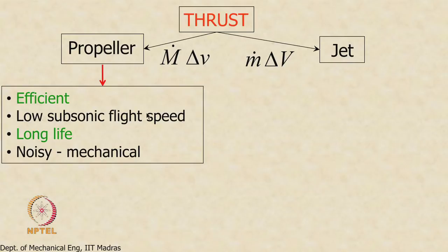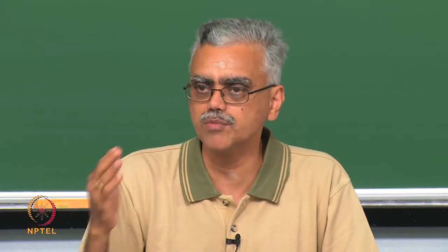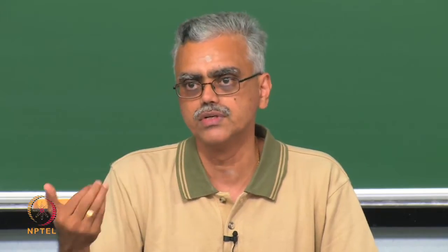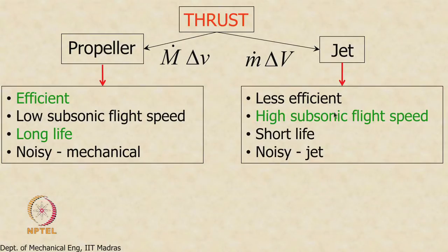The other alternative is jet propulsion, which accelerates a smaller mass of air through a large change in velocity. That large velocity change is accomplished by increasing specific enthalpy through two things: increasing pressure and increasing temperature. This means the components are exposed to high temperature, high pressure, and high RPM, so the life is short, and the efficiency is also not as high as a propeller at the same flight speed.